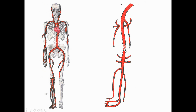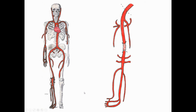The posterior tibial artery branches into medial and lateral plantar arteries supplying the plantar side of the foot, whereas the anterior tibial artery becomes the dorsalis pedis artery on the top of the foot. The dorsalis pedis has a deep plantar artery that meets up with the plantar arch, formed by the continuation of the medial and lateral plantar arteries. This is not an exhaustive list of lower limb vessels, but a good orientation to the major ones.